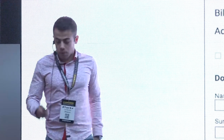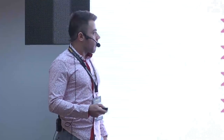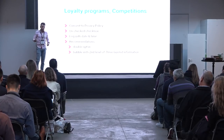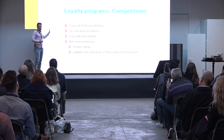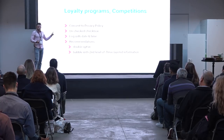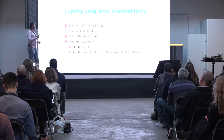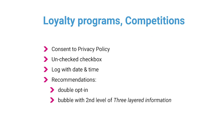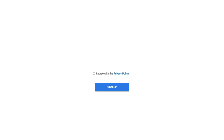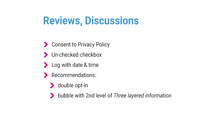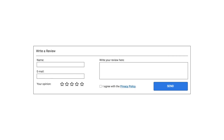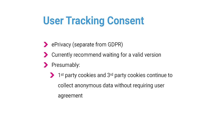The same applies for user registration within the order form — a typical order form with a user registration option and its own privacy policy agreement checkbox. The same logic applies for other parts of your website like loyalty programs, competitions — insert consent to the privacy policy. The same with reviews and discussions — add the consent checkbox.